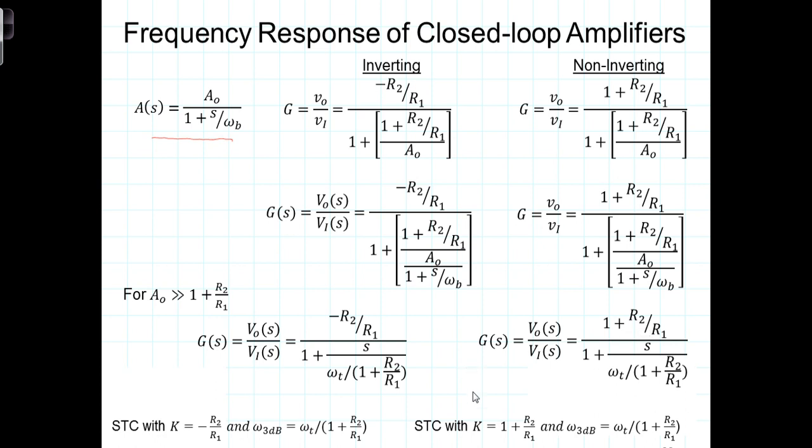What this is saying is that when we're working with operational amplifiers that are internally compensated and have finite gains, we'll get a similar low-pass filter relationship. Only now, the cutoff frequency, instead of being down around 10 Hz, is going to be significantly higher. The cutoff frequency is going to be at omega sub T divided by this 1 plus R2 over R1.